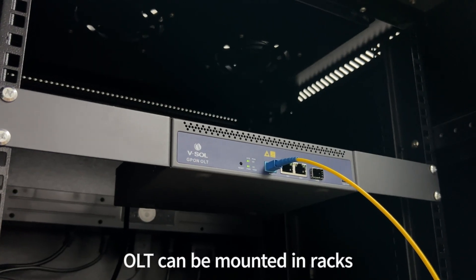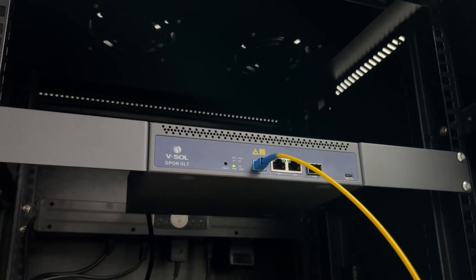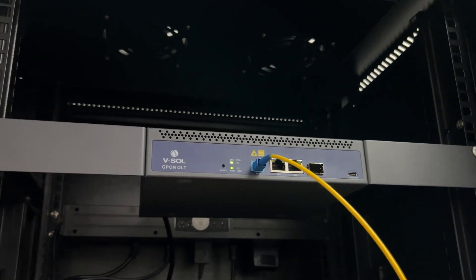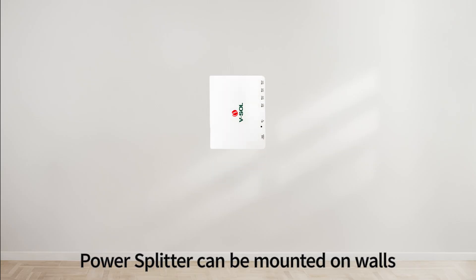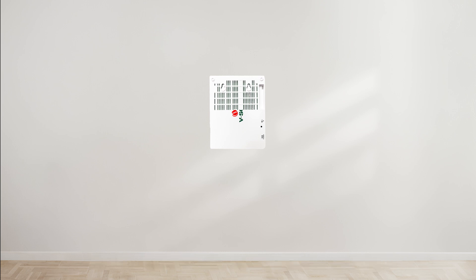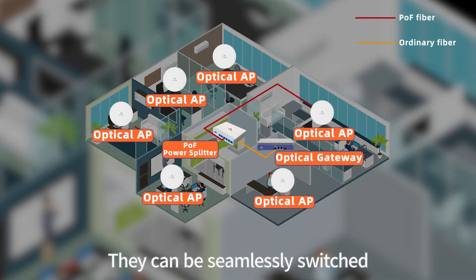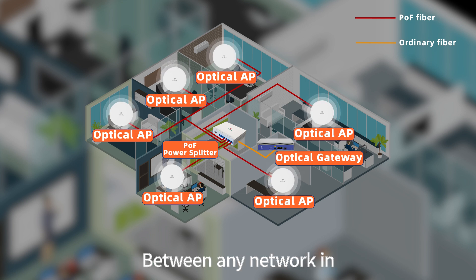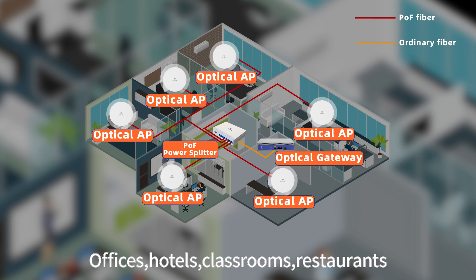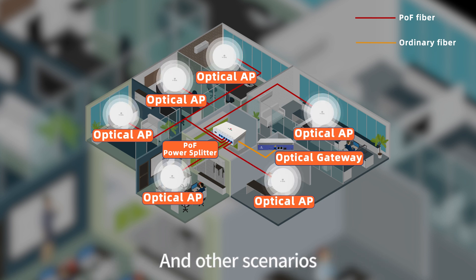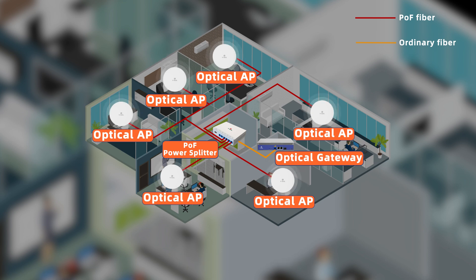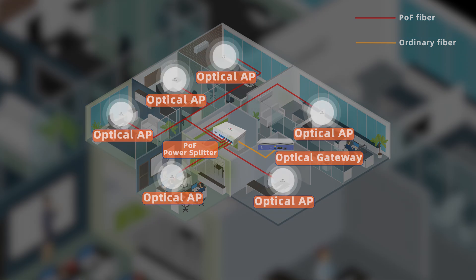The OLT can be mounted in racks, and the Power Splitter can be mounted on walls. They can be seamlessly switched between any network in offices, hotels, classrooms, restaurants, and other scenarios.